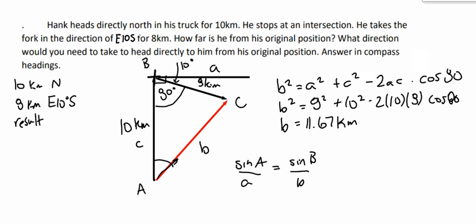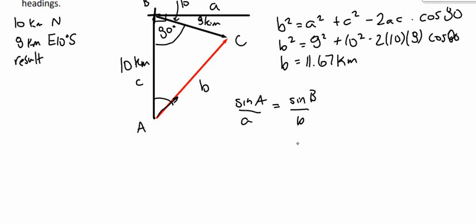And I'm going to use sine of B over B. I'm going to go down a little bit. And I get sine of A over 8 kilometers equals sine of 80 over 11.67.